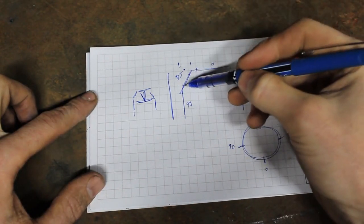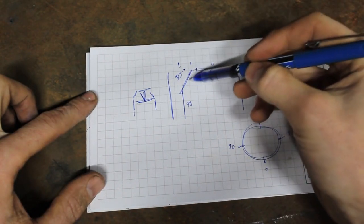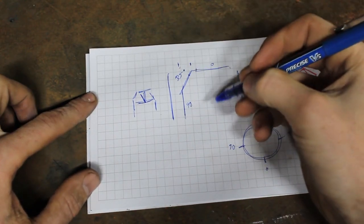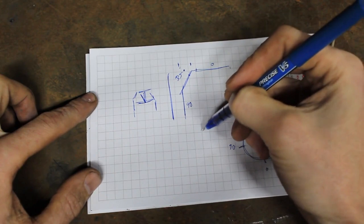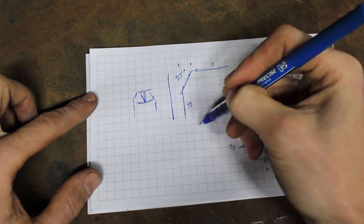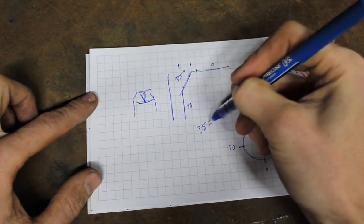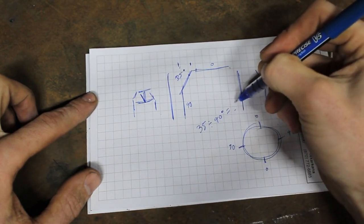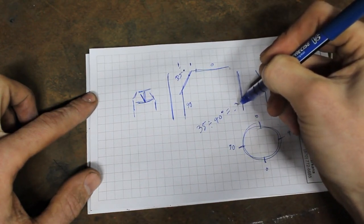So how then do we make sure that we maintain a 35 degree angle as we rotate that tube? And it's very simple. It is just a ratio. We're going to take our 35 degree angle, we're going to divide it by 90 and that's going to give us 0.38.